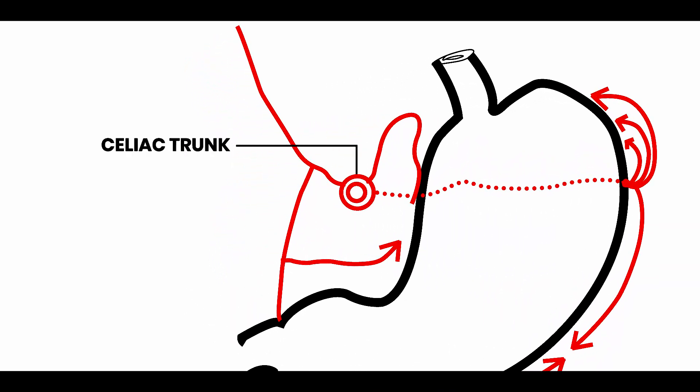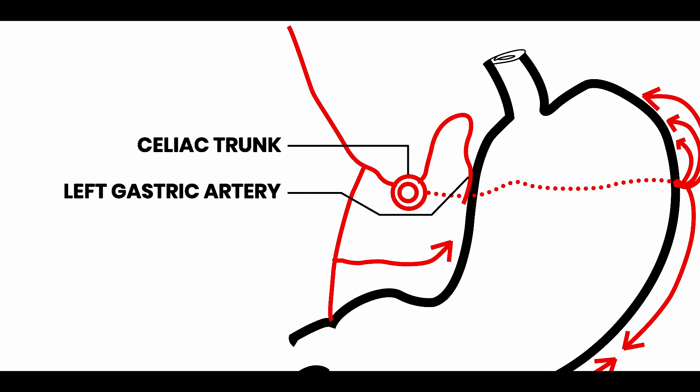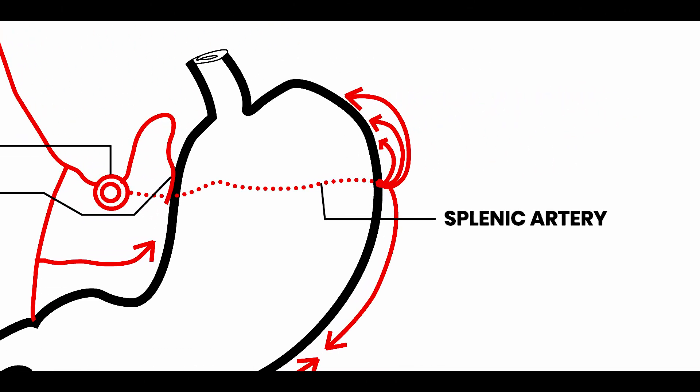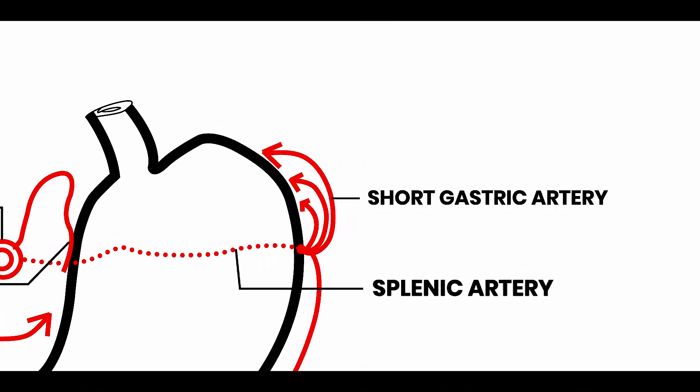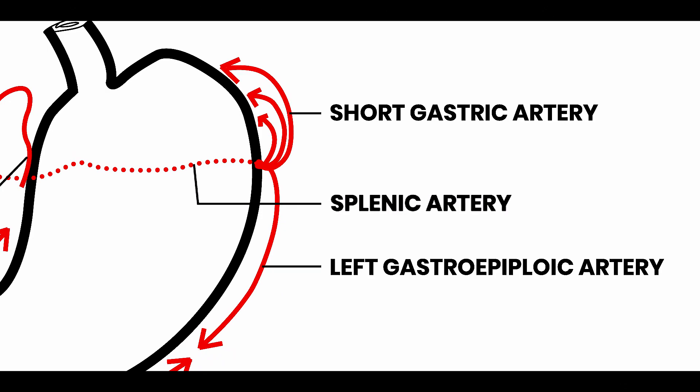All these arteries supply the musculature and the interior of the stomach. So you have to write the names of the arteries as labels: this is the celiac trunk, this is the left gastric artery, this is the splenic artery, and this is the gastroduodenal artery.